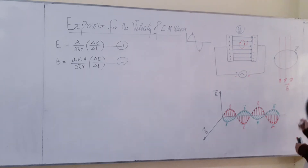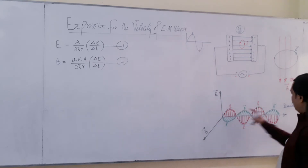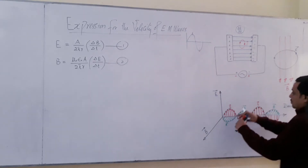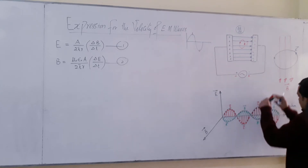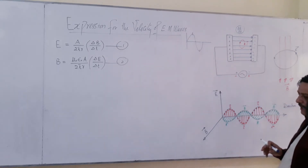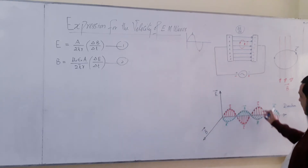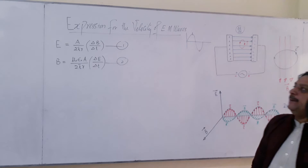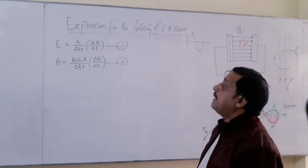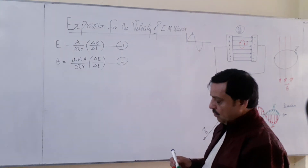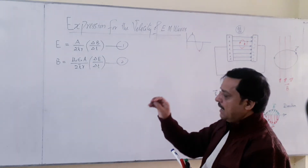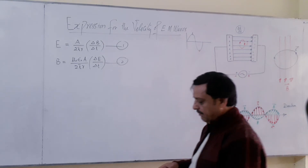So let us suppose this is the direction of propagation. E or B don't go perpendicular to the profile — they propagate along it. When E is varying, there is B; when B is varying, there is E. E and B can keep varying, energy is released, and energy is always propagated in the form of waves. Therefore these waves are called electromagnetic waves. This is the velocity of electromagnetic waves that was determined by Maxwell by solving these two equations. So we are going to derive an expression for the velocity of electromagnetic waves.